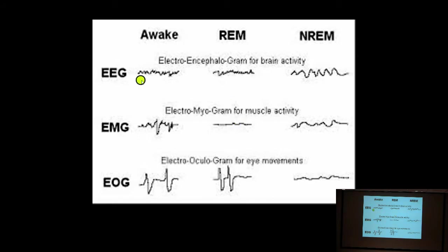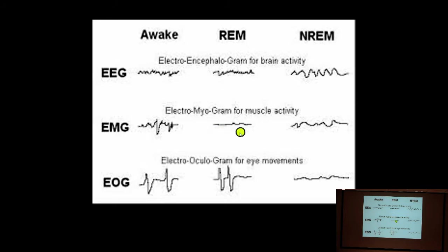On the polysomnography tracings, during wakefulness and non-REM sleep there is muscle activity on the EMG, but notice virtually nothing during REM sleep — absent muscle activity supports the diagnosis of REM sleep. On the oculogram, there are relatively few eye movements during non-REM sleep but abundant eye movements during REM sleep. The contrast between eye movements and absent muscle activity during REM sleep is the most important thing on this slide.